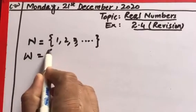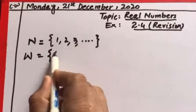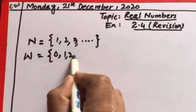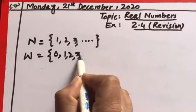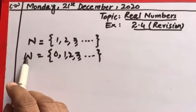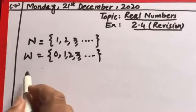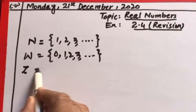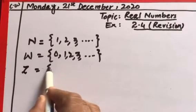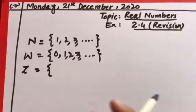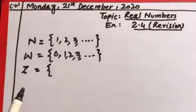If we add 0 to the natural numbers, they become the whole numbers — that is the set of whole numbers. After that we revised integers. Integers are of two types: positive integers and negative integers.